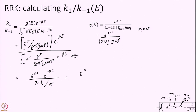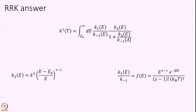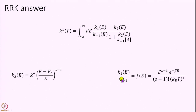Now we have a full prescription to calculate the RRK answer. We want to evaluate the integral: K1 = K−1 × ∫[EA to ∞] K2(E) × (K1/K−1)(E) dE. In this integral, K2(E) = K† × ((E−EA)/E)^(S−1), and K1/K−1 is calculated from the density of states expression. K† is some constant that we have not yet specified — we will calculate it using the high-pressure limit.